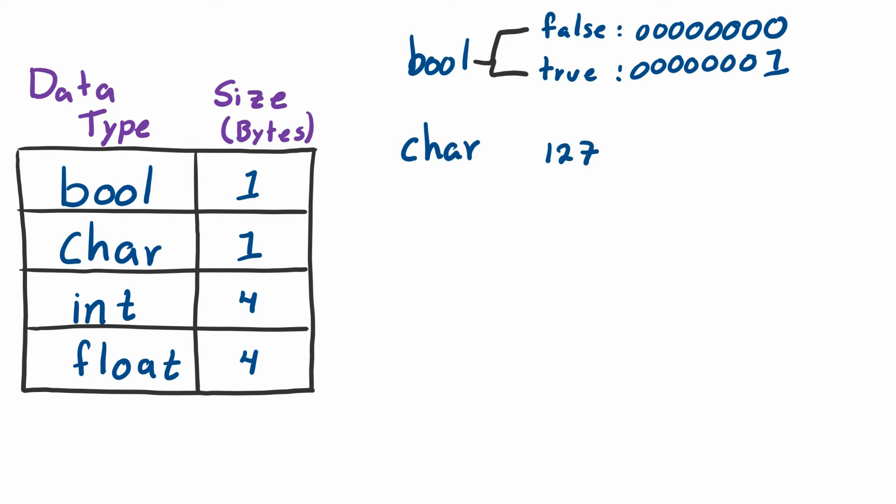127 in binary looks like this: it is seven ones. Because these seven ones is smaller than a byte, smaller than eight bits, we have to add a zero to its left.